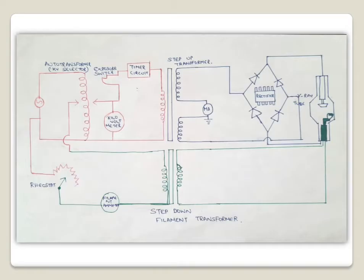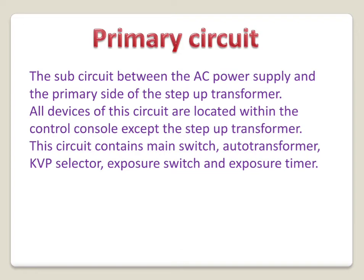In this image you can see the x-ray circuit. The part shown in red color is the primary circuit, the part shown in blue color is the secondary circuit, and the part shown in green color is the filament circuit. The primary circuit starts from the source of alternating current up to the primary coil of the step-up transformer.